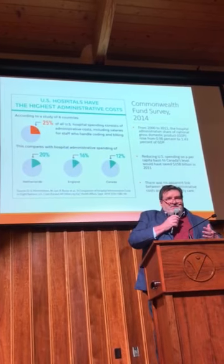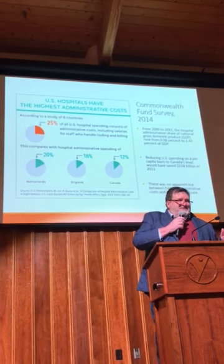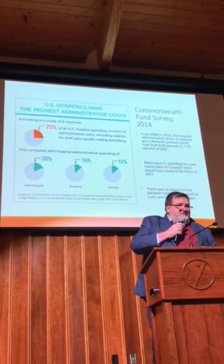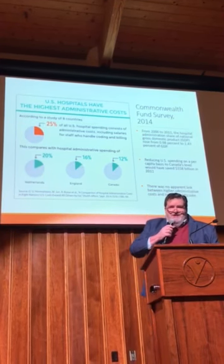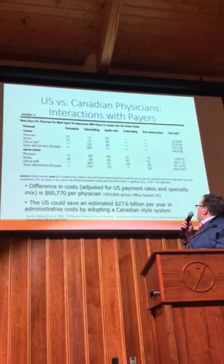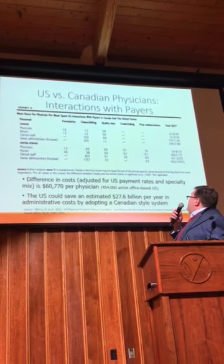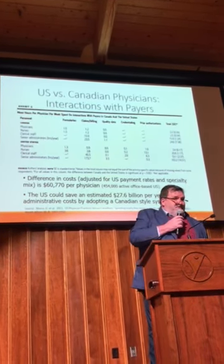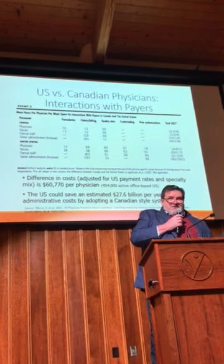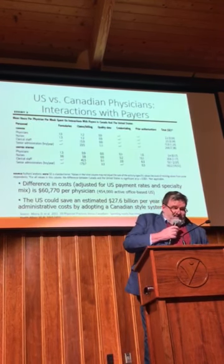Our healthcare system is Byzantine and complex with a lot of administrative costs — by various measures, 13 to 20 percent. A lot of that is due to our health insurance system: we have a private health insurance system with over 2,000 insurers, which creates a lot of extra paperwork and claims administration. The Medicare system has administrative costs of about 1 to 2 percent when you look at the cost of actually administrating the bills. The private healthcare system is more like 15 percent. Healthcare providers have to spend a lot of time on administrative work — we look pretty good in the amount of time they spend with patients, but a lot of time goes to claims and administering costs.